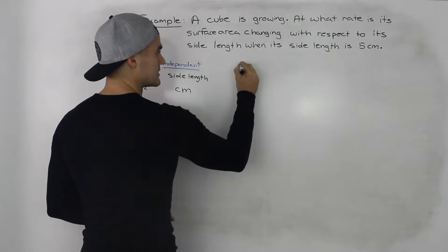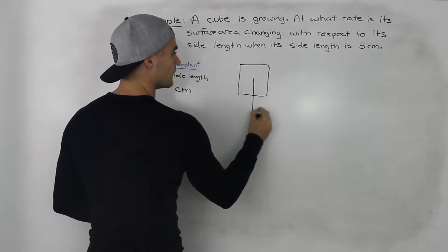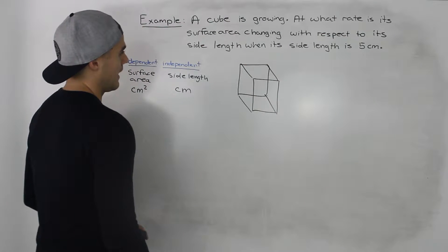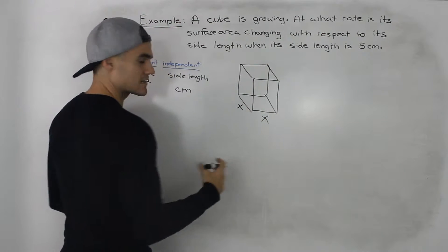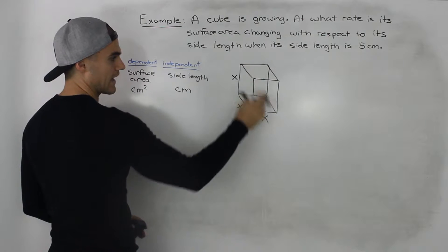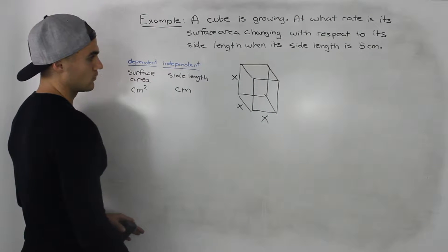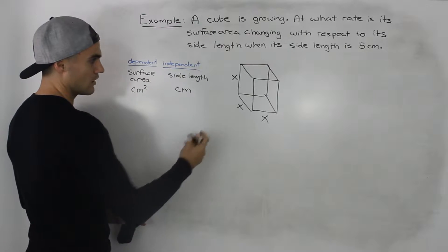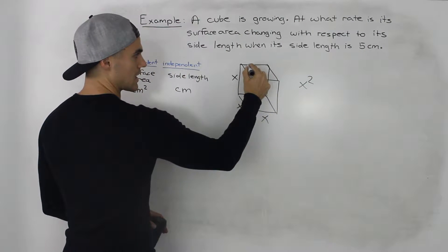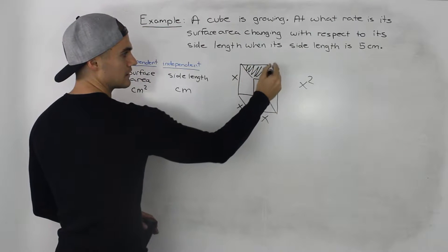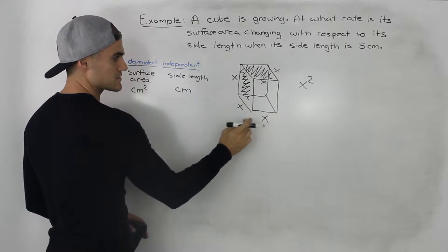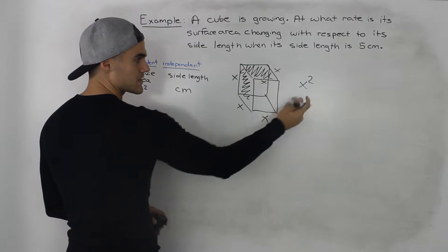Let's draw a diagram of a cube. The cube looks something like this, and we label its side lengths as x. Because it's a cube, all of the lengths are equal — length, width, and height are all x. The area of each face is x squared. For example, the top face has area x times x, and the same goes for every side face — x times x, which is just x squared.